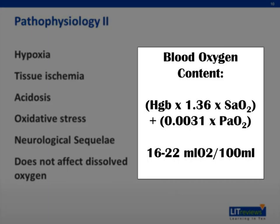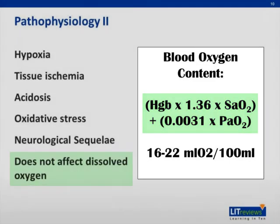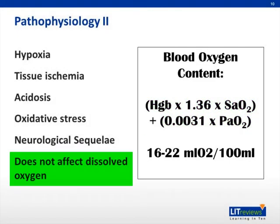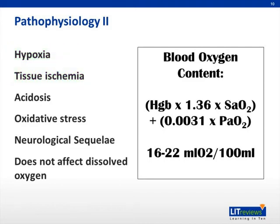The total amount of oxygen available in our blood is the sum of both dissolved oxygen and hemoglobin-bound oxygen, as represented by the equation on the right. While carbon monoxide does not affect the amount of dissolved oxygen, that only represents 2% of the total oxygen content. Most of the oxygen available in our blood is bound to hemoglobin. Reducing the amount of oxygen bound to hemoglobin, or the ability of hemoglobin to offload oxygen to the peripheral tissues, systemic tissue hypoxemia and ischemia result. Peripheral tissues and cells are forced into anaerobic metabolism, causing a lactic acidosis.